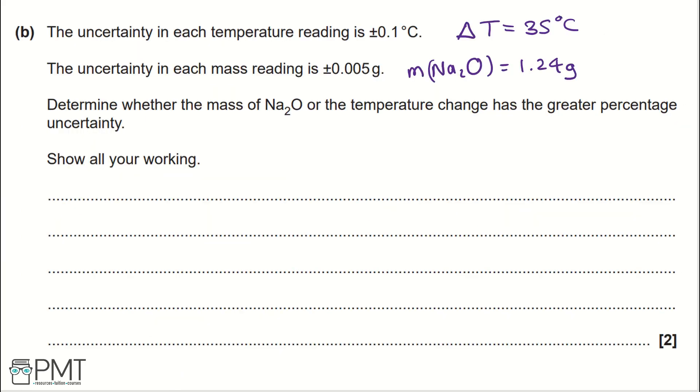Part B: The uncertainty in each temperature reading is plus minus 0.1 degrees Celsius. The uncertainty in each mass reading is plus minus 0.005 grams. Determine whether the mass of Na₂O or the temperature change has the greater percentage uncertainty. Show your working.